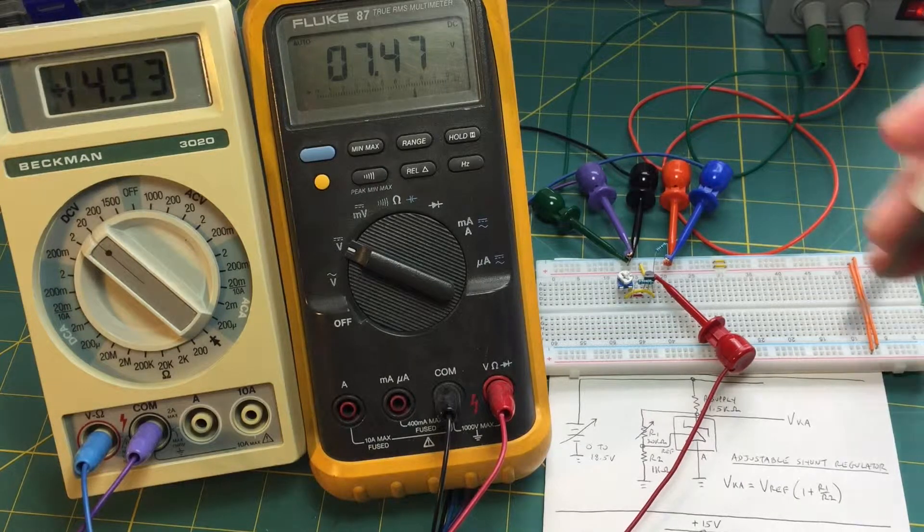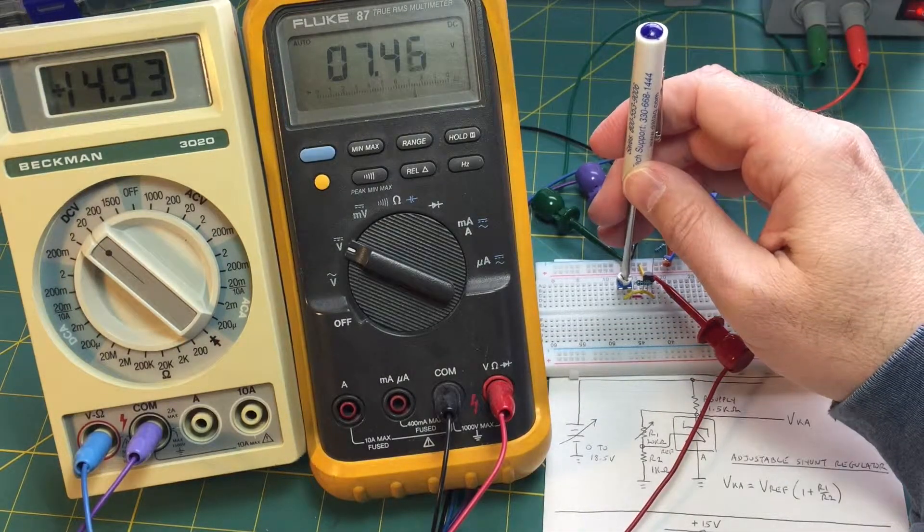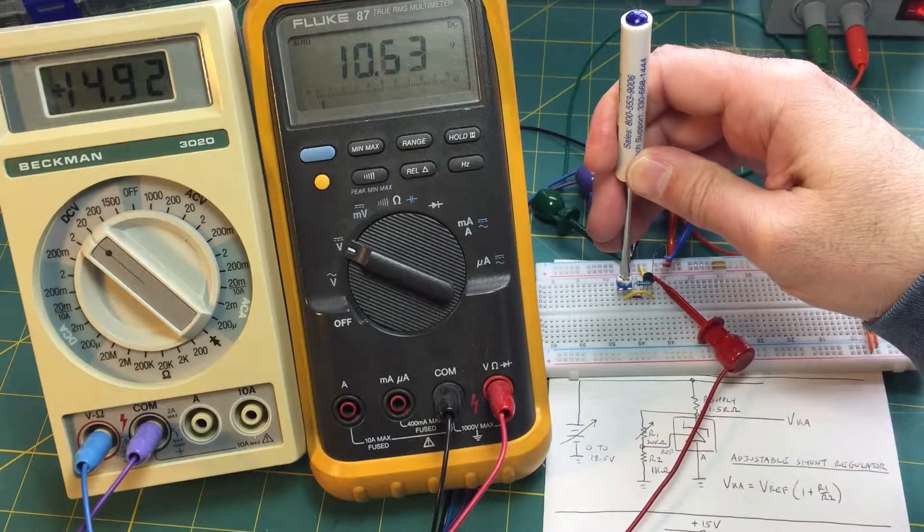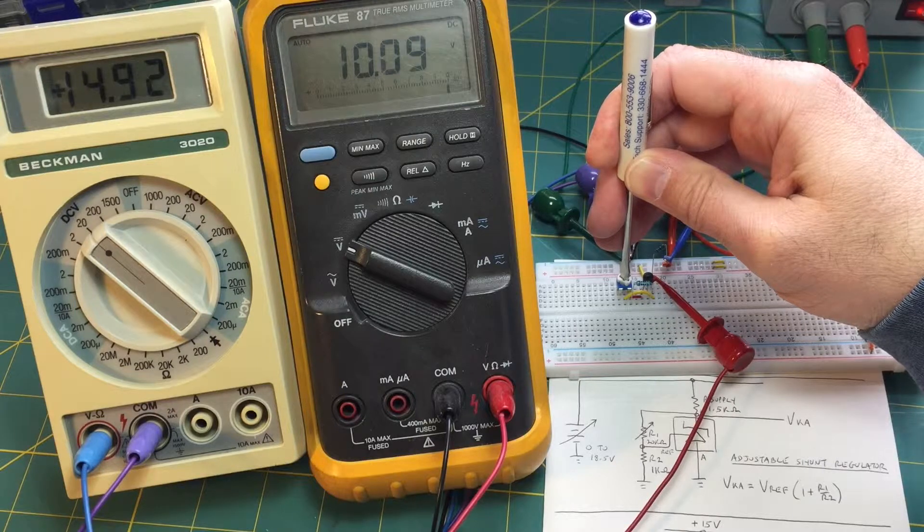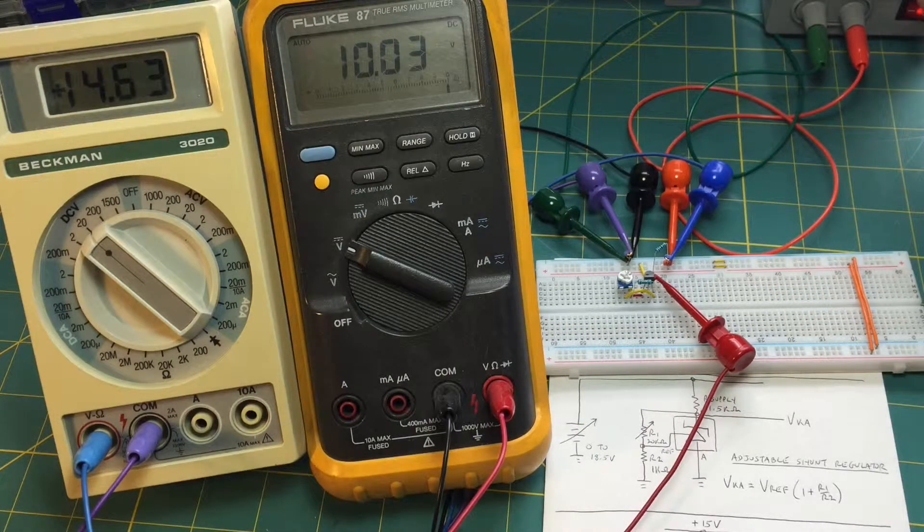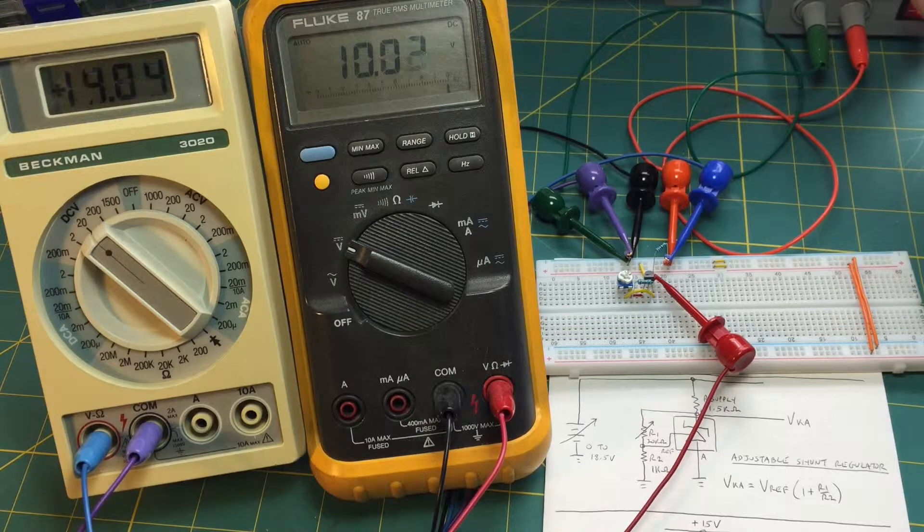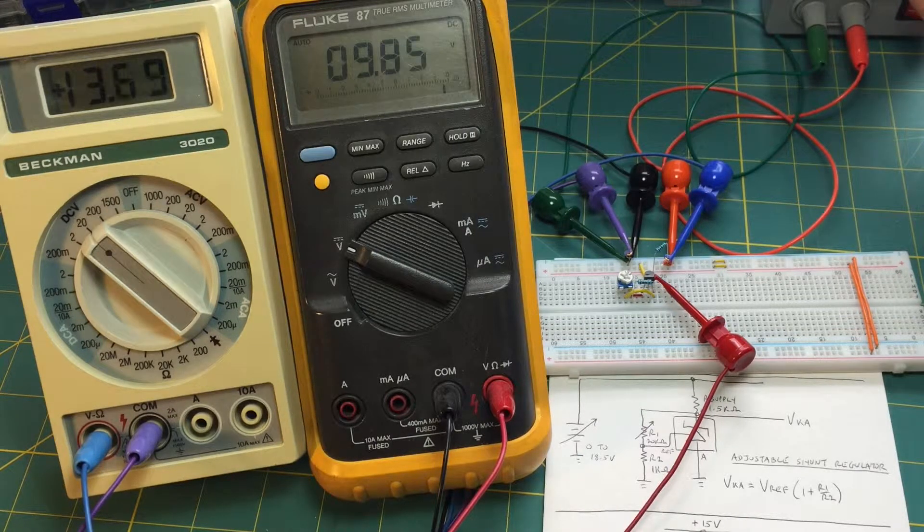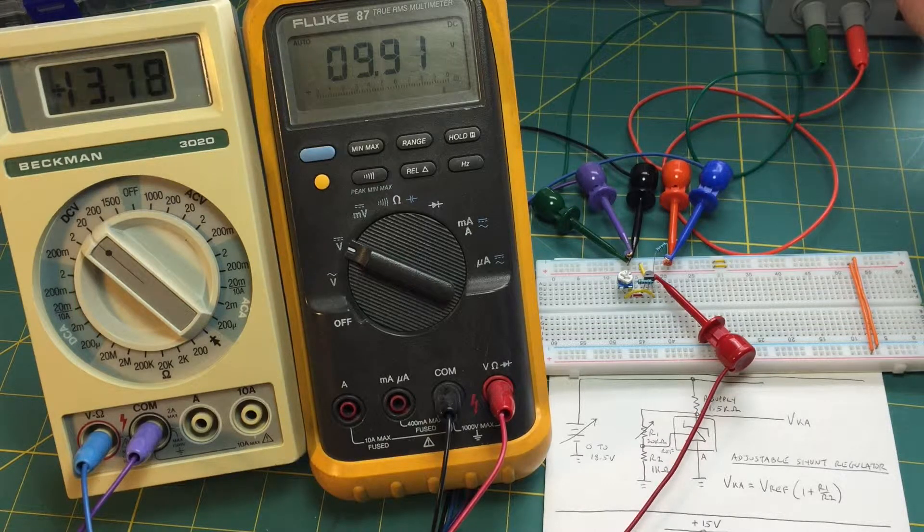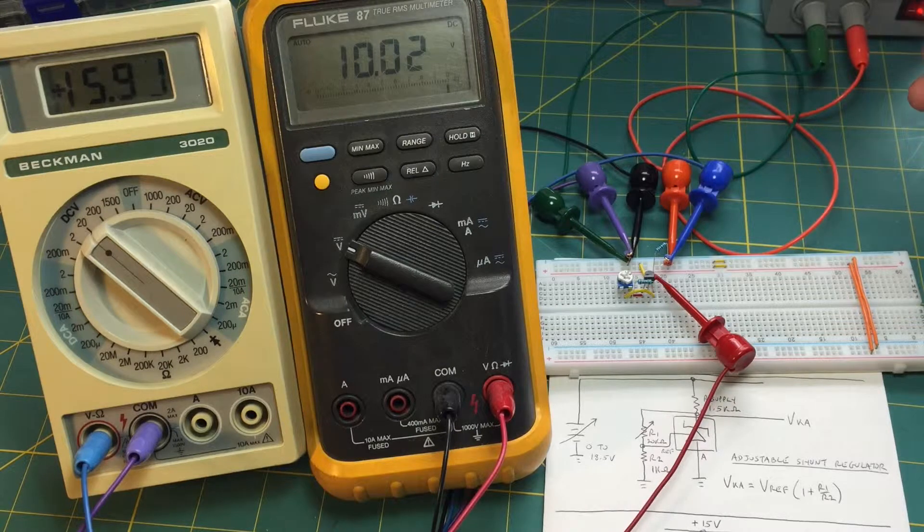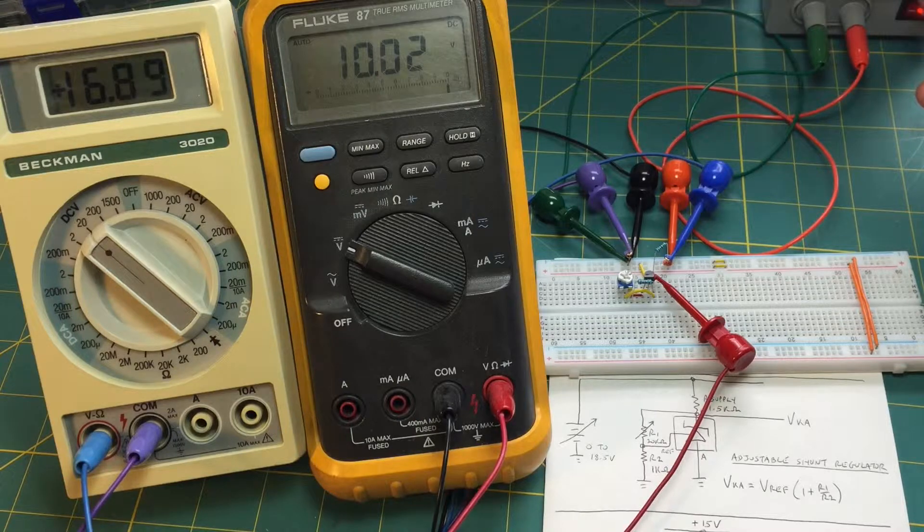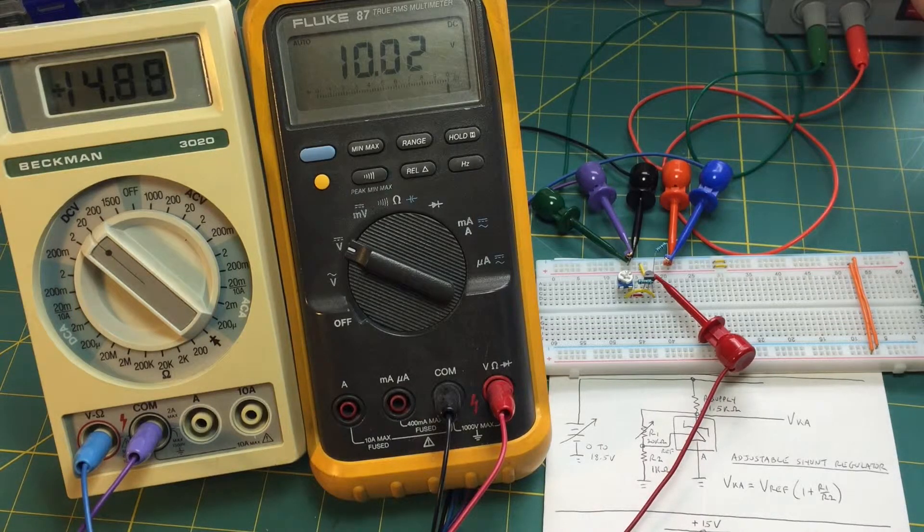We'll try one more, we'll go up higher, let's go to 10, 10 volts. Vary our input and of course this drops out even sooner now at about 13, 13.5 or maybe a little sooner. Of course we'll go back up to 18.5, we're still regulating at 10. So this is the adjustable configuration.